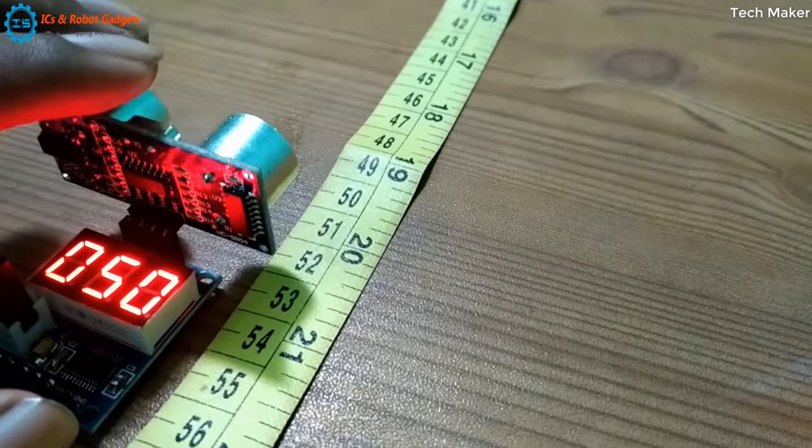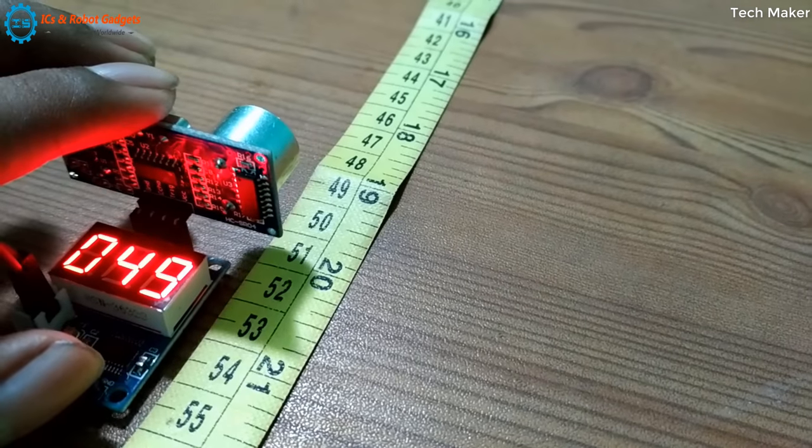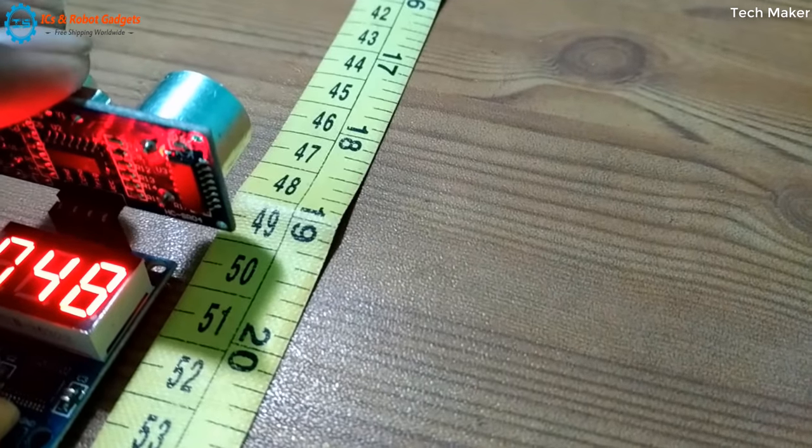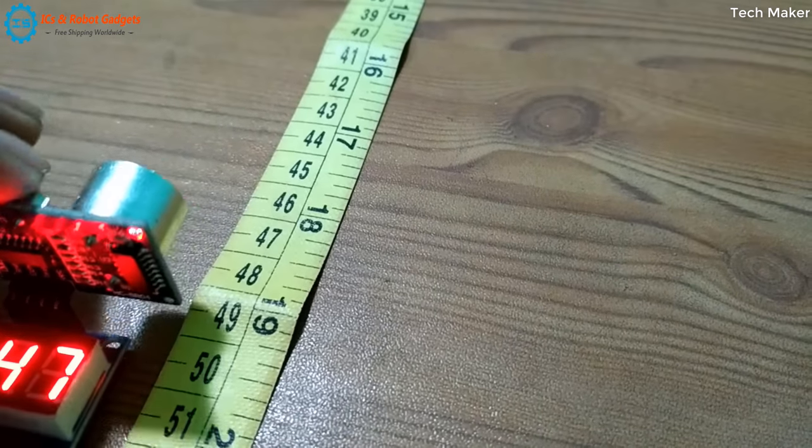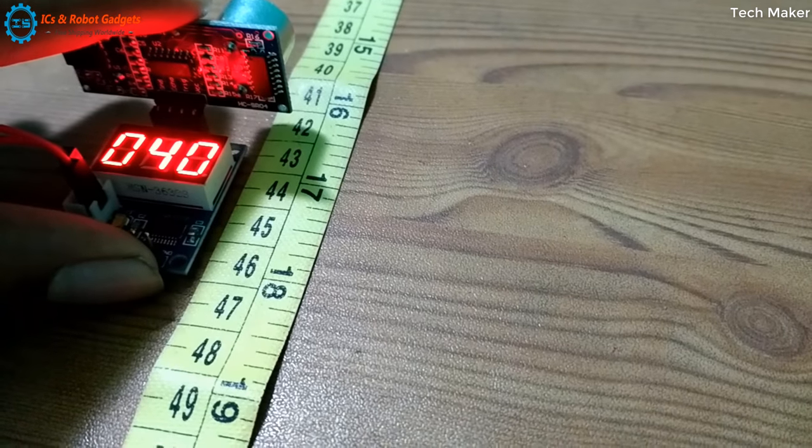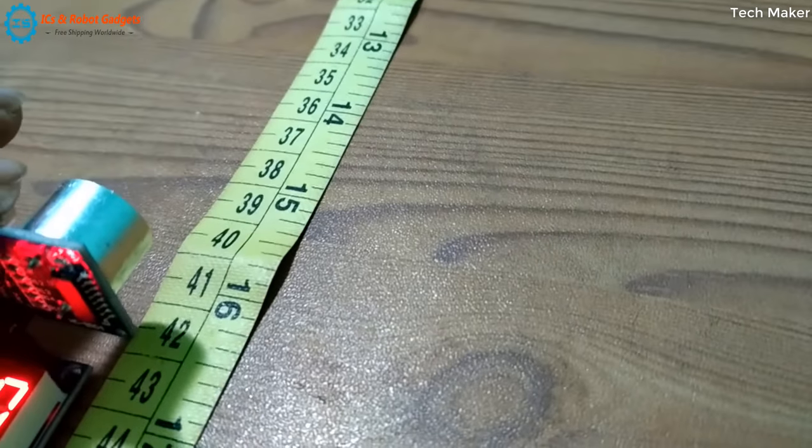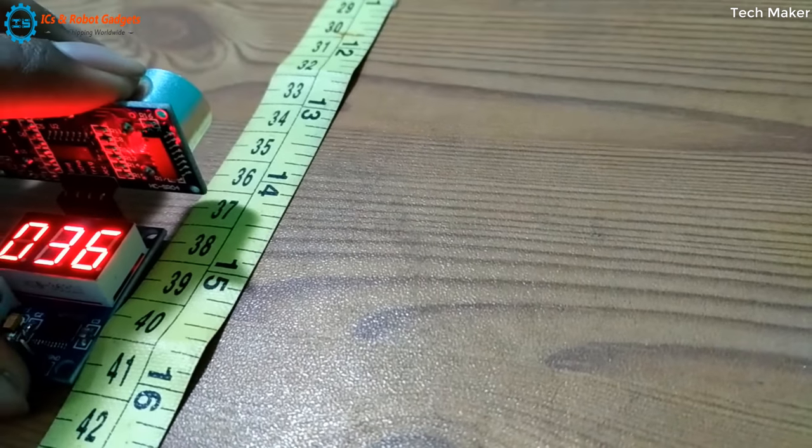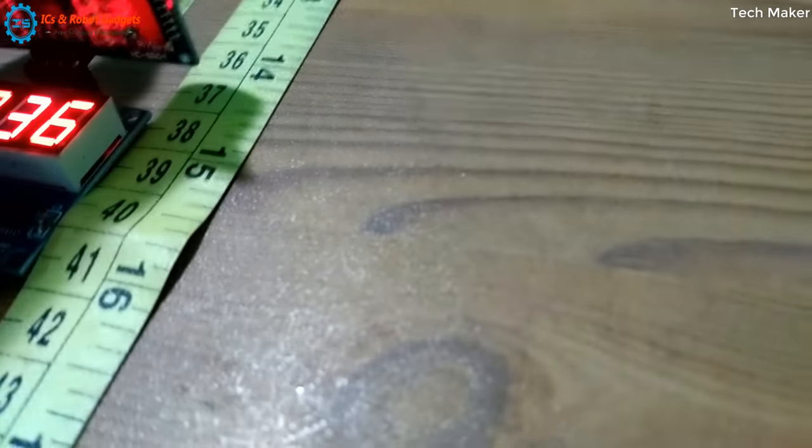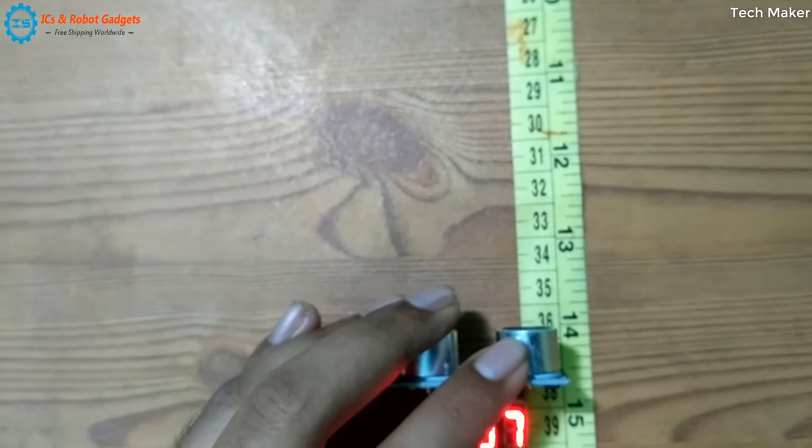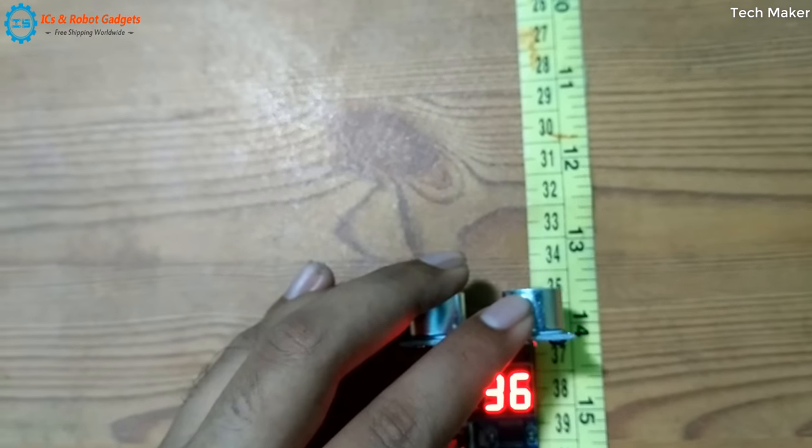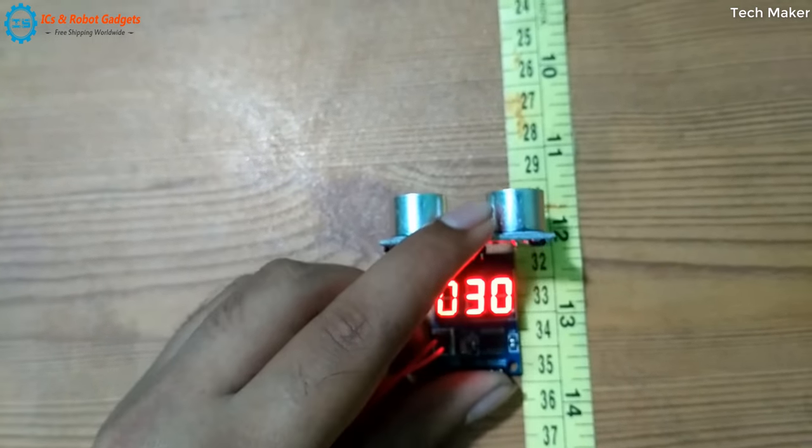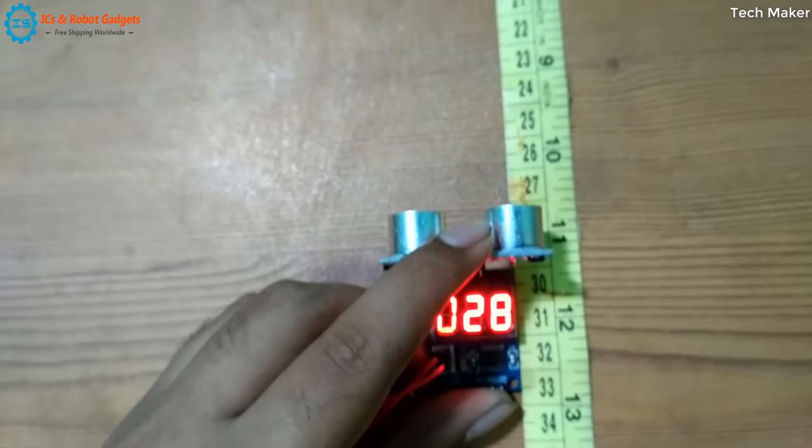See, 49, it is showing correctly. Another 1 centimeter: 48. We will move to 40. Yes, it is showing correctly. Now we will move to 35, showing 36. It is 35 now. 32, 30, 27, 24, 20.